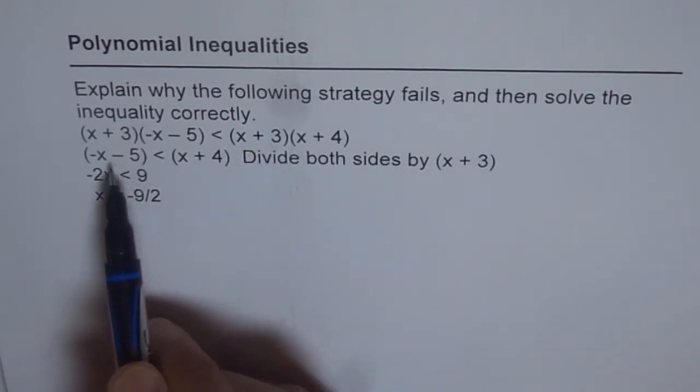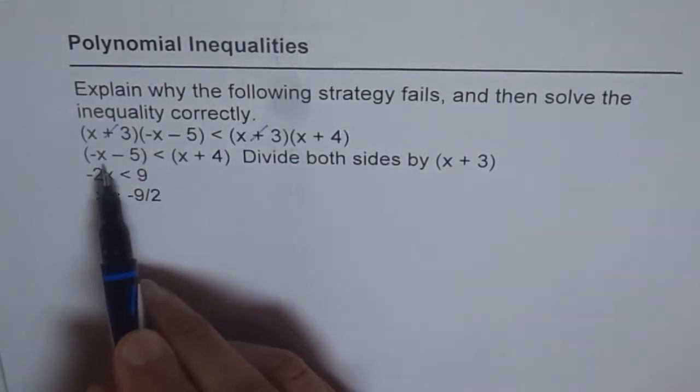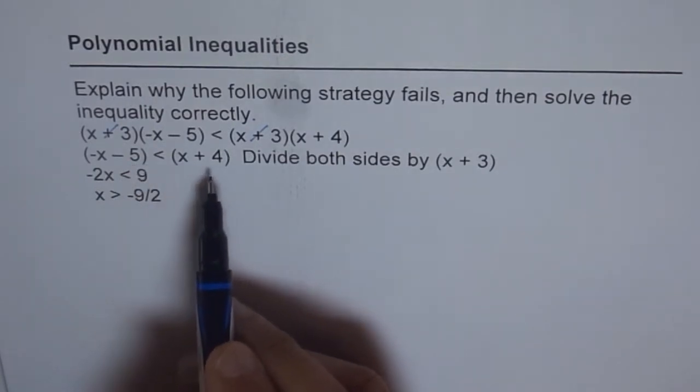And when you do that, you get minus, so they cancel out, right? So this cancels out and you get minus x minus 5 is less than x plus 4.